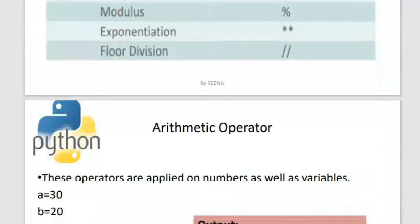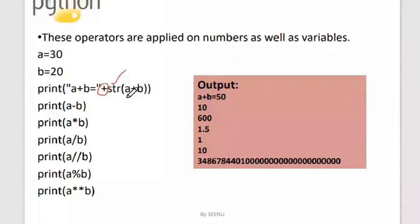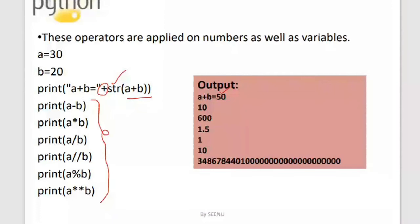Let us put everything together in a single program. The value of a is 30 and b is 20. In the print statement I've used a concatenation operator, so I converted the result to a string — a plus b gives 50. Similarly, I've directly calculated values for subtraction, division, multiplication, modulus, and other operations. I hope everybody is clear on this slide.